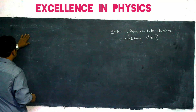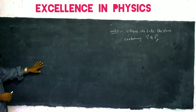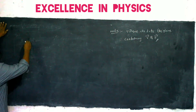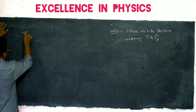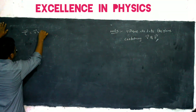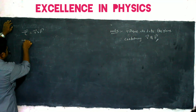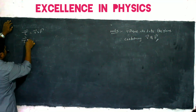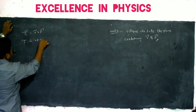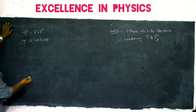Now let us understand the importance of the torque equation. Torque is written as R dash cross F dash in vector form. In scalar form: torque equals RF sin theta.